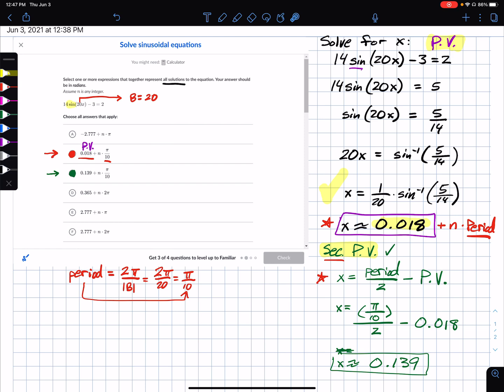So we are good to go on this one. I'm going to label this as secondary PV for that 0.139. All right, I hope that helped.